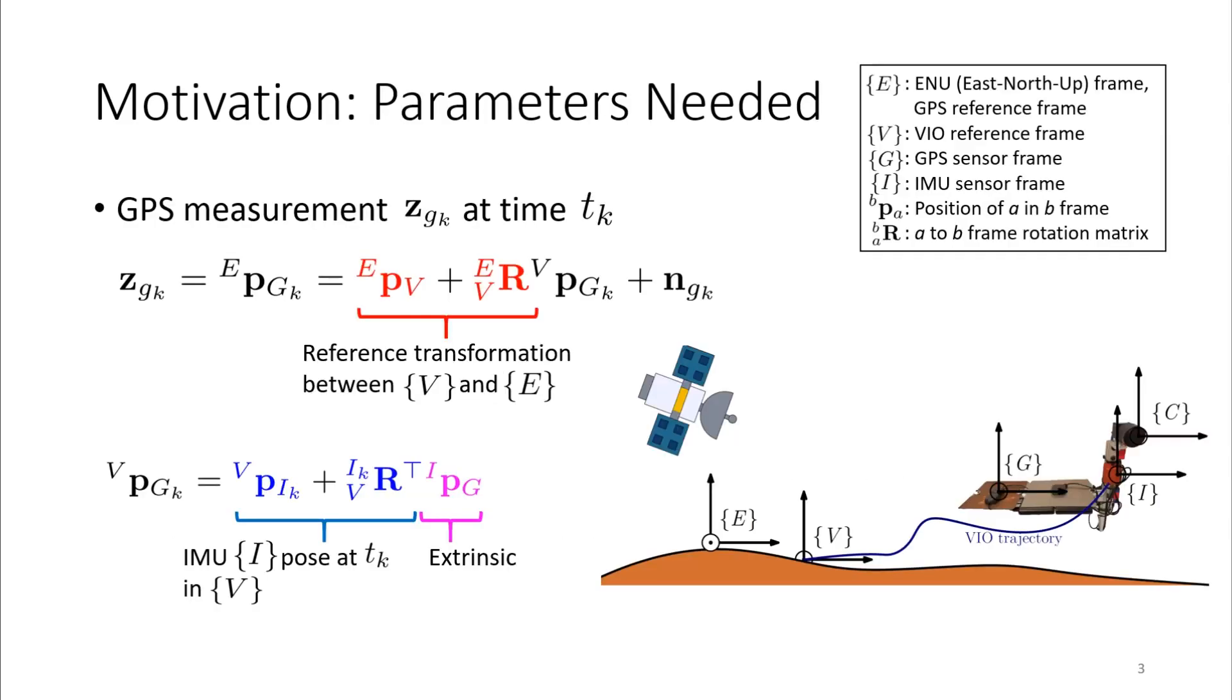Assume we get a GPS measurement at time tk and we want to use this information to estimate the IMU pose of the VIO system. To do so, we need to find an equation that represents the measurement as a function of IMU pose.